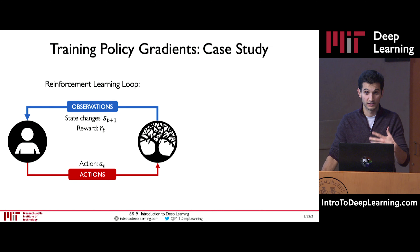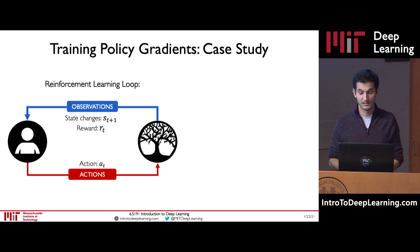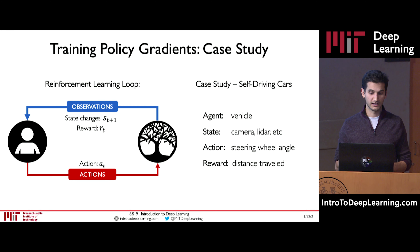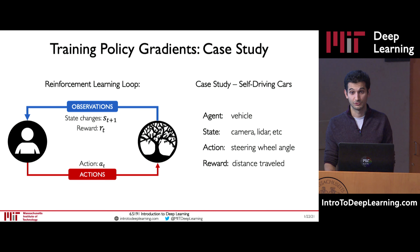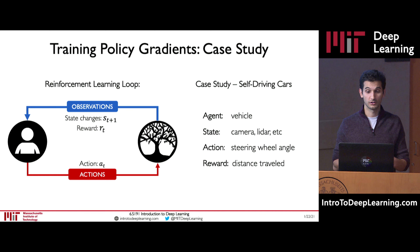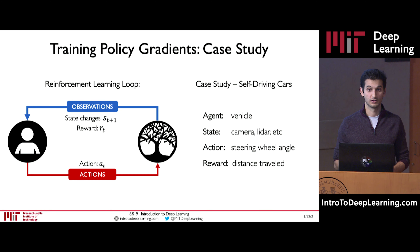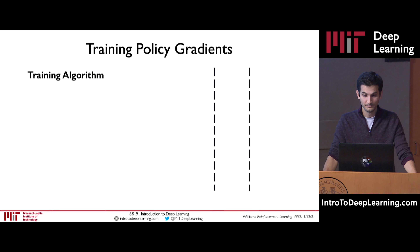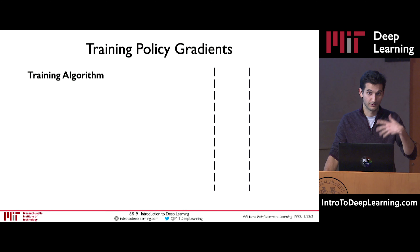Now let's look at how policy gradients work in a concrete example. Let's revisit the reinforcement learning training loop from earlier in today's lecture and think about how we could train an autonomous vehicle to drive using reinforcement learning and policy gradients. The agent is a vehicle whose goal is to drive as long as possible without crashing. Its states come from a camera and other sensors like LIDAR. It can take actions in the form of the steering wheel angle to execute, with the reward being maximizing the distance traveled before crashing.